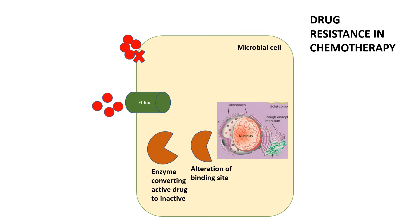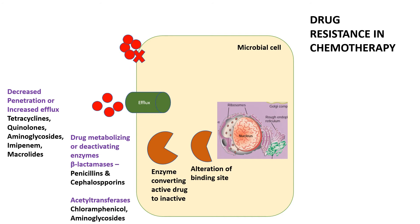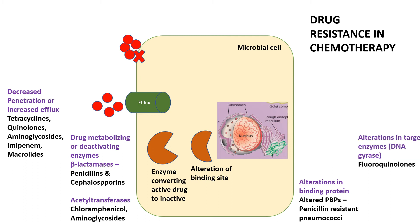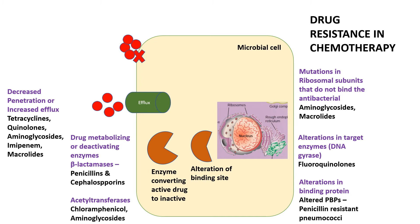Examples of resistance mechanisms: decreased penetration or increased efflux causes resistance to tetracyclines, quinolones, aminoglycosides, imipenem, and macrolides. Drug-metabolizing enzymes such as beta-lactamases inactivate penicillins and cephalosporins; acetyltransferases cause resistance to chloramphenicol and aminoglycosides. Altered penicillin-binding proteins cause penicillin resistance in Neisseria. Alterations in DNA targets affect fluoroquinolones, and ribosomal mutations cause resistance to aminoglycosides and macrolides.